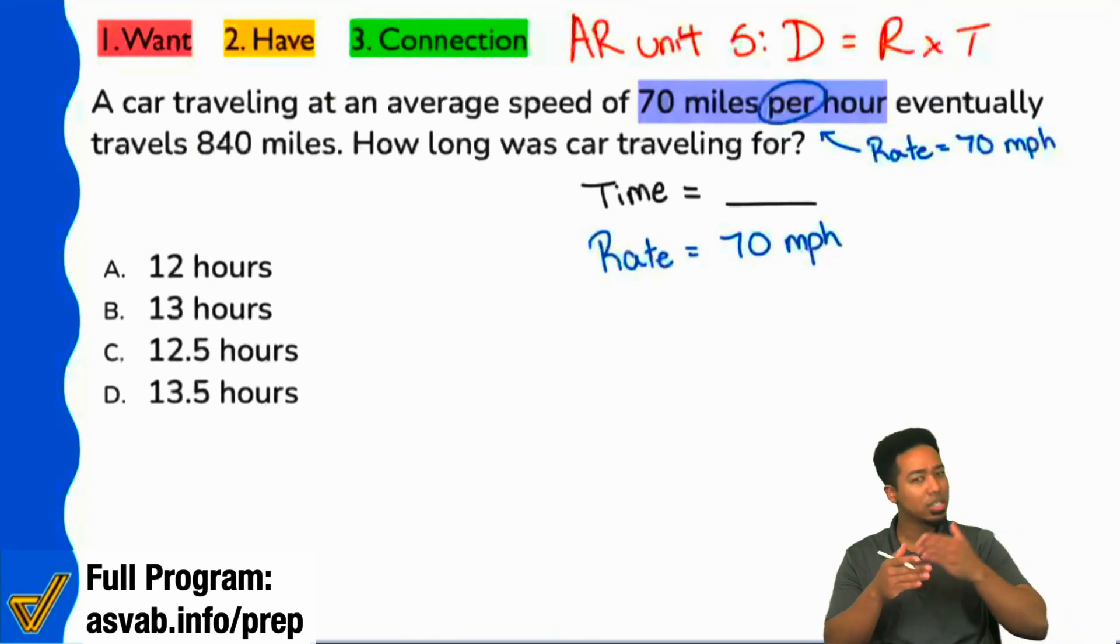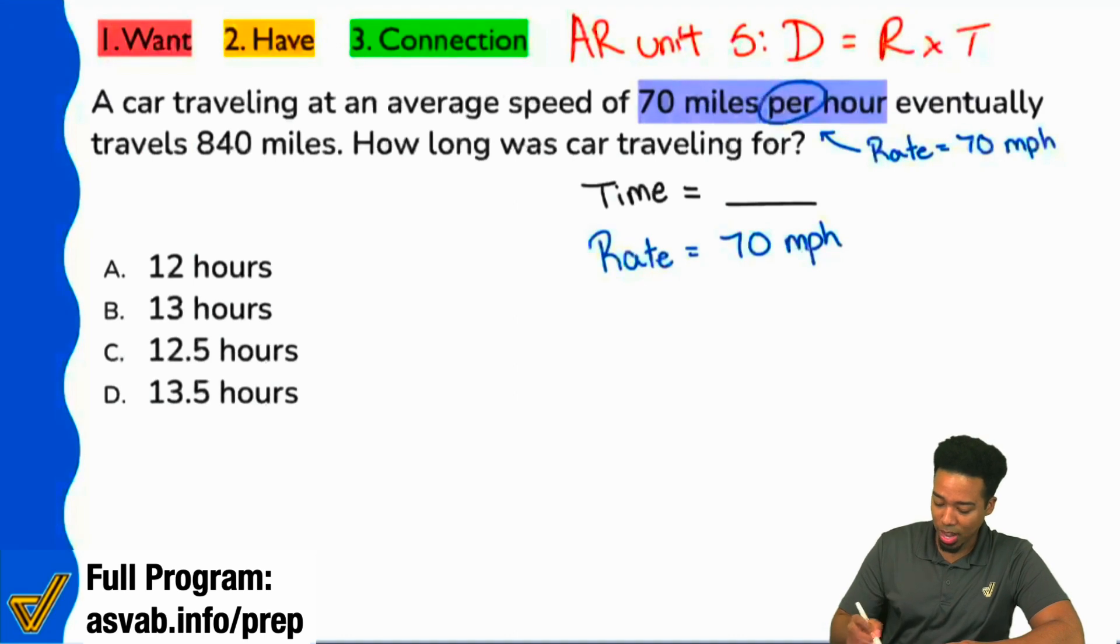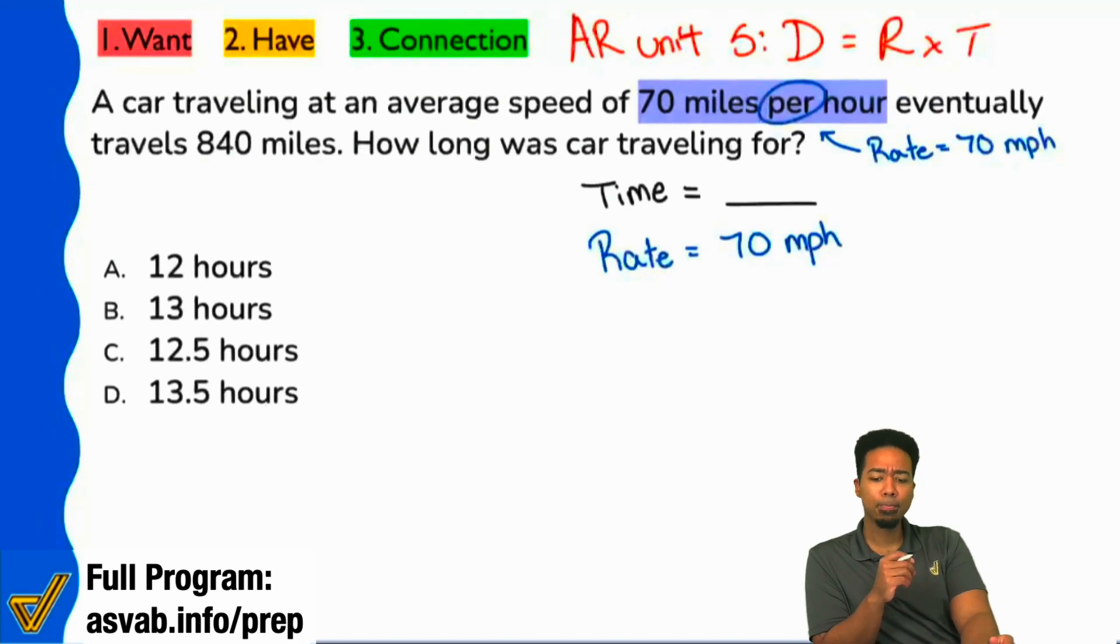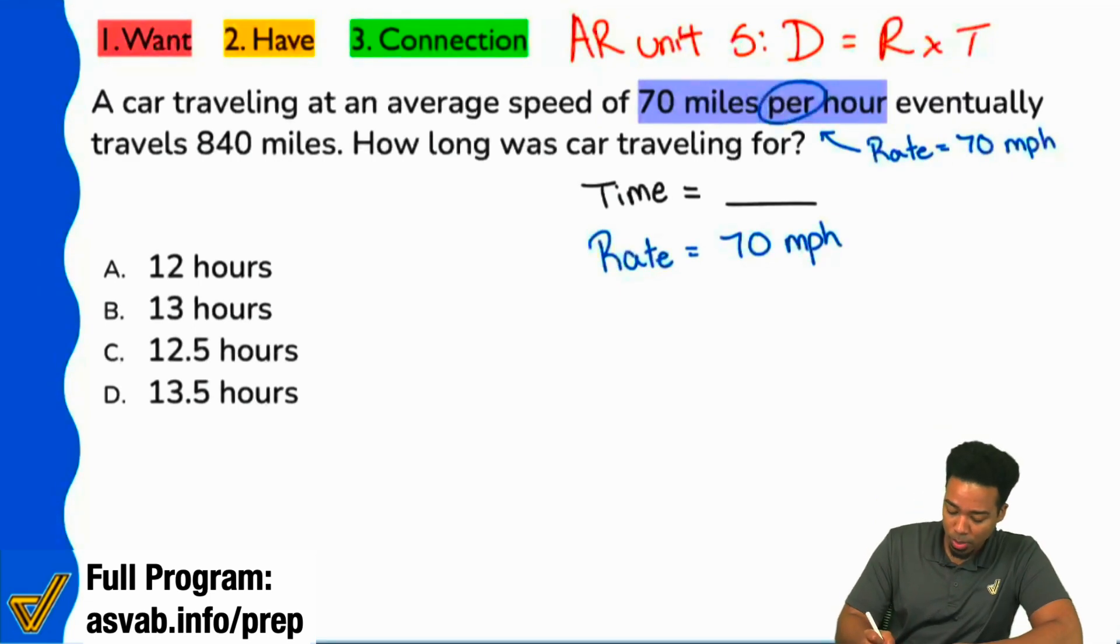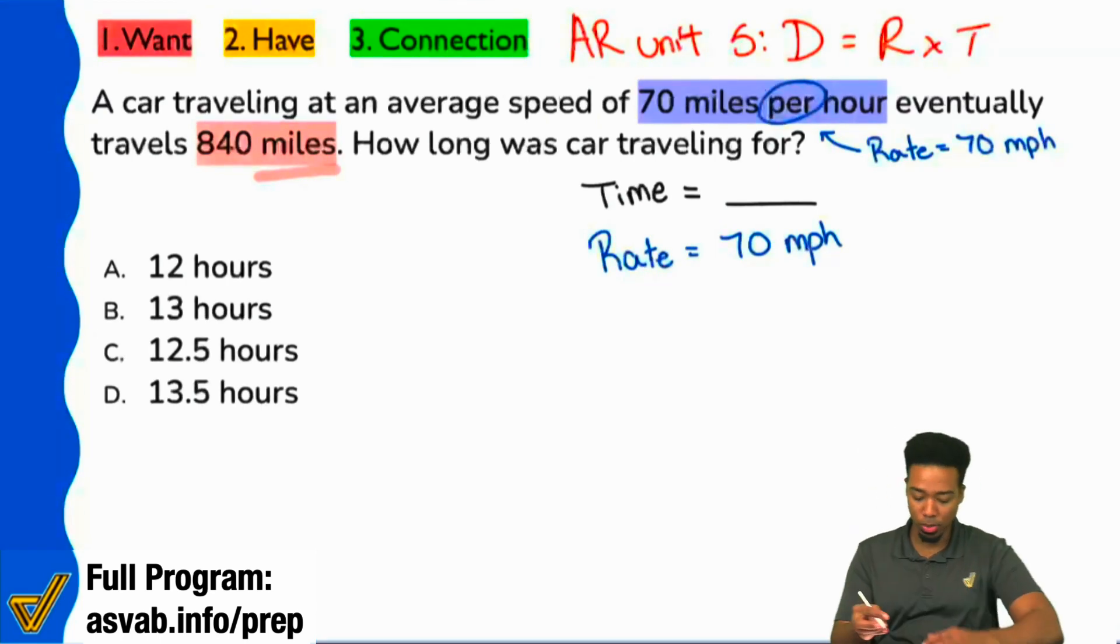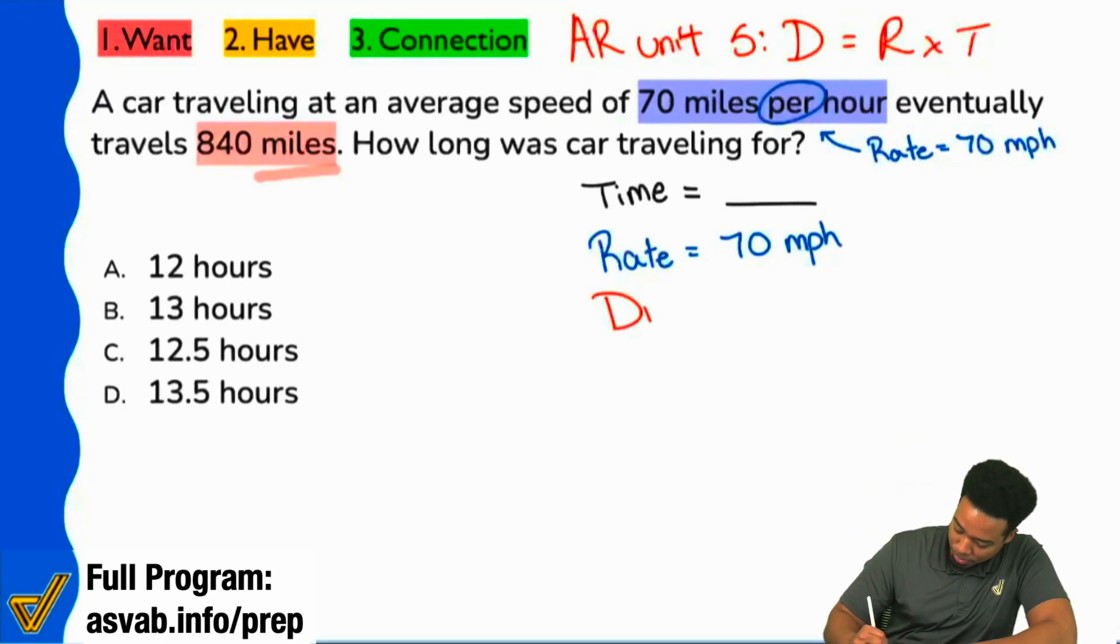Rate equals 70 miles per hour. And then we see the next phrase here that says it eventually travels 840 miles. What is that going to be, everybody? The 840. What does the 840 mean? Some of us here are saying distance. And yep, that's true. Because the unit of measure, we see it right here. It is miles. It could be feet, miles, any amount, really. Distance is any amount that you're trying to accomplish. That's our distance.